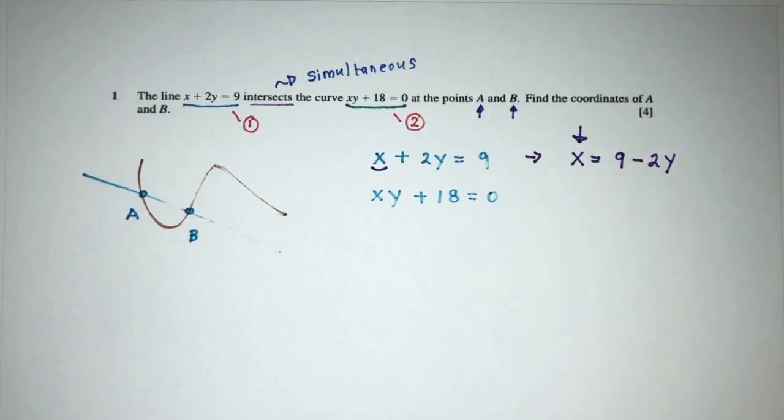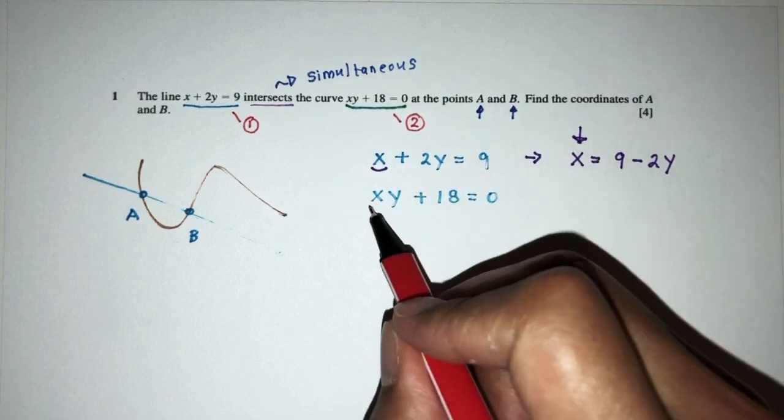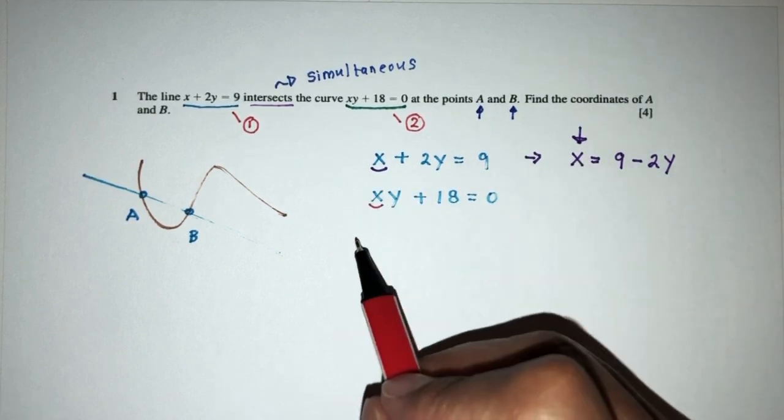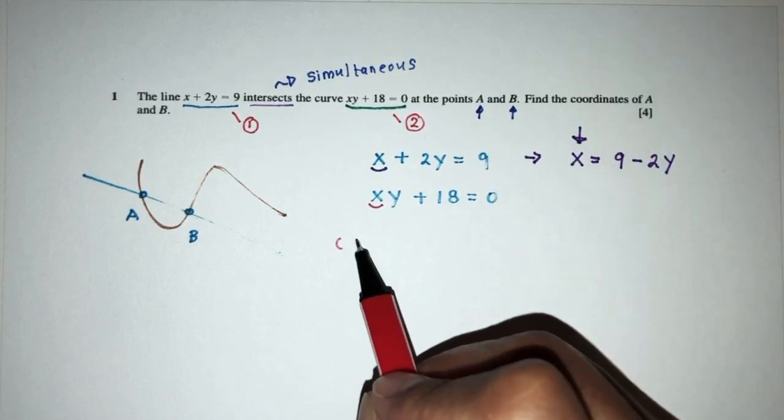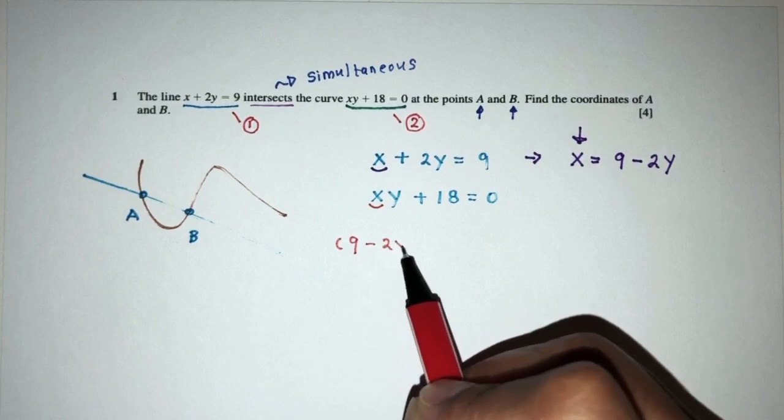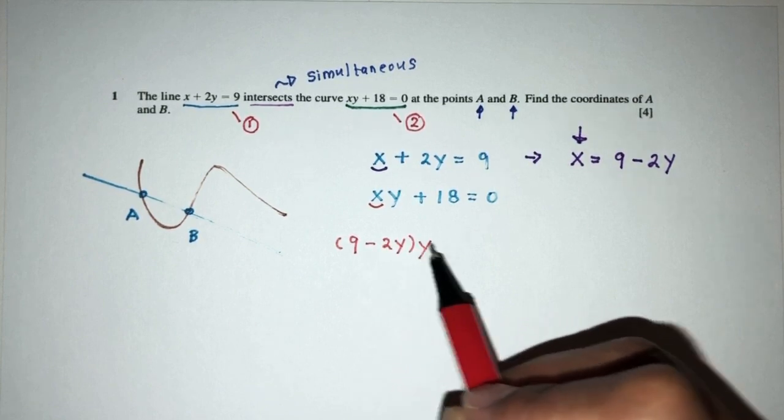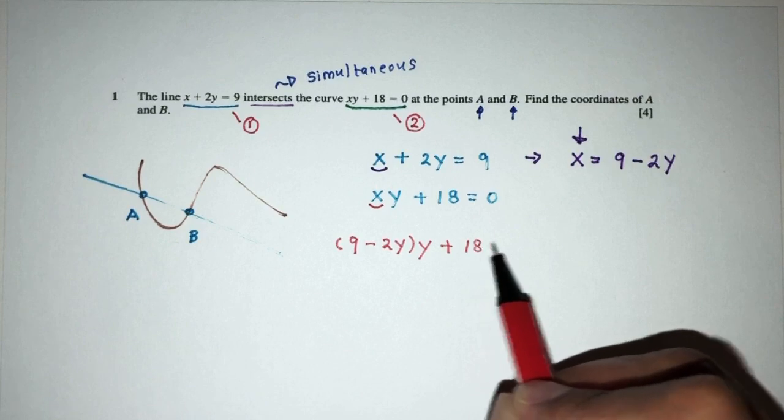Now, again, here I'm trying to solve the simultaneous equation. And I'm trying to solve by the method of substitution. So, I have x here. I have x here. So, I'll be placing this spot. So, I know x is also equal to 9 minus 2y times y, and plus 18 is equal to 0.